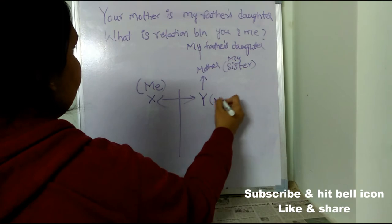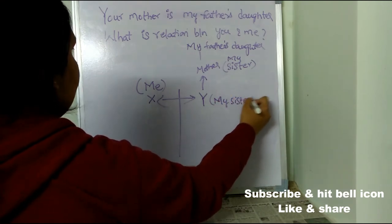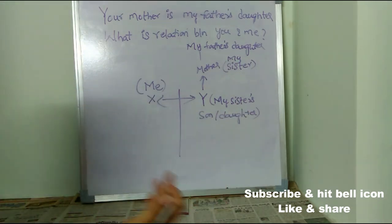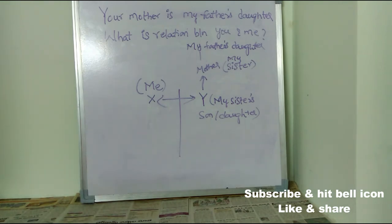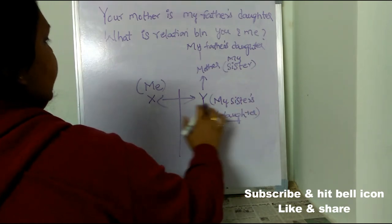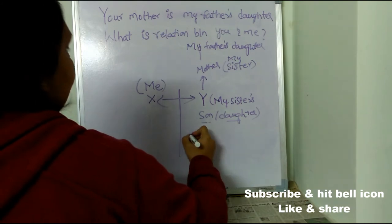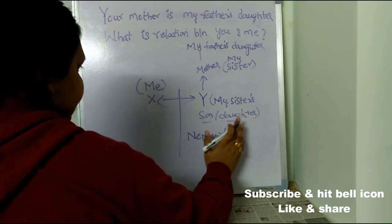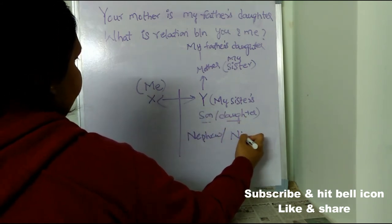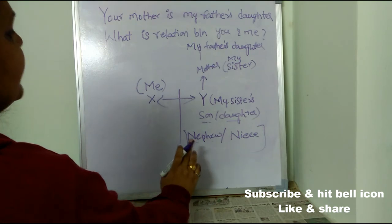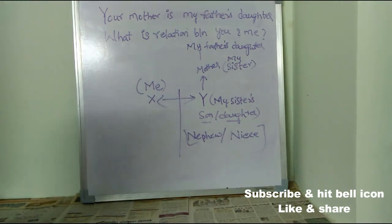This is me, this is my sister — your mother. So Y is my sister's son or daughter, because we don't know whether Y is a boy or a girl. If Y is a boy, he is my sister's son — sister's son is called nephew. If Y is a female, my sister's daughter is niece. So the relationship of X and Y is: Y becomes nephew or niece to X.